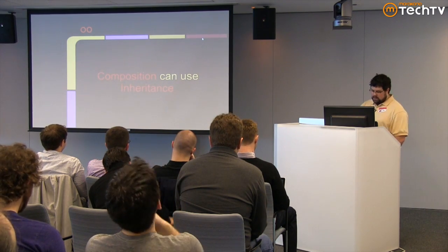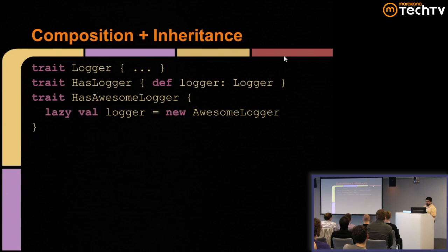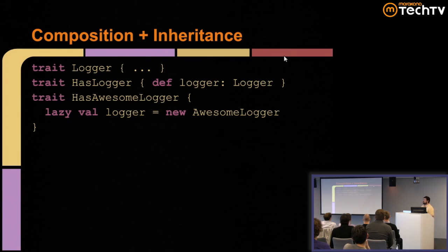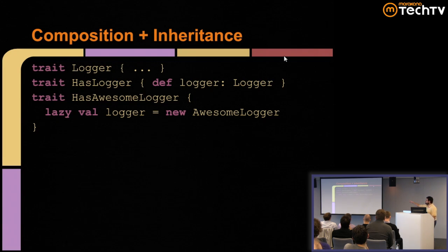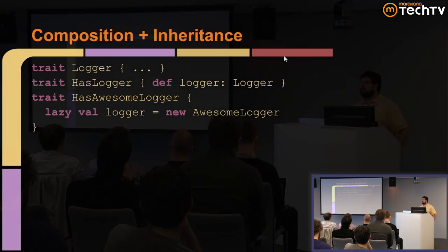Composition can include inheritance in Scala. I can define a logger trait, and then a companion trait called HasLogger, which just says that I have a logger — notice it's a def and not a val, so I can override it with a lazy val or a val. Then I compose using the HasLogger trait, mixing it into a class and getting an instance of an awesome logger as a delegate. I'm using inheritance to express my composition. This is one of the two paradigms that Scala blends — if you're in OO, this can make sense; if you're in FP, it might not.